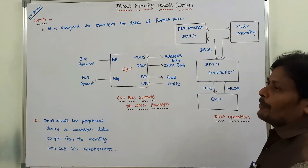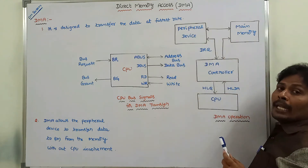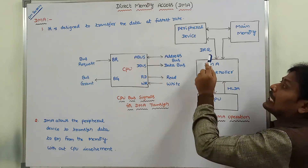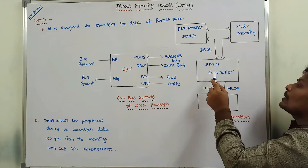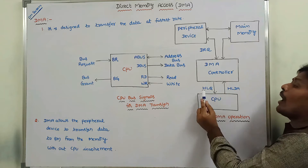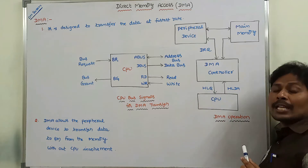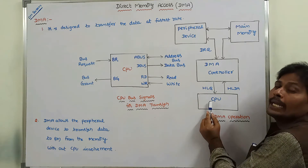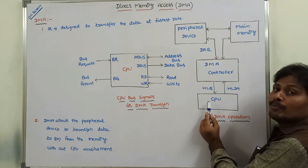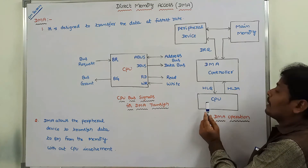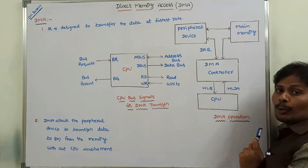How can it be done? A peripheral device wants to send some data to the main memory. First, it sends a DMA request to the DMA controller in the form of VRQ. Now, the DMA controller sends the hold request signal to the CPU in the form of HLQ. Now, the CPU releases control over the memory buses such as the address bus and data bus.